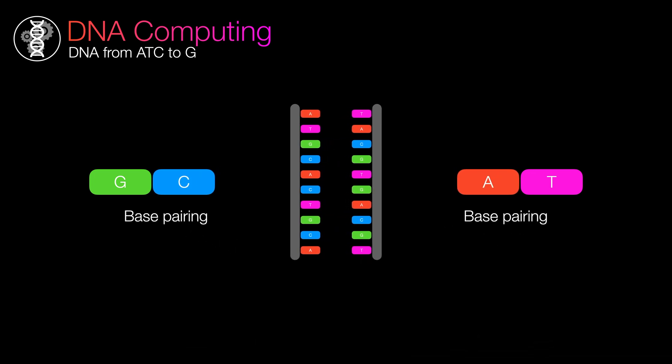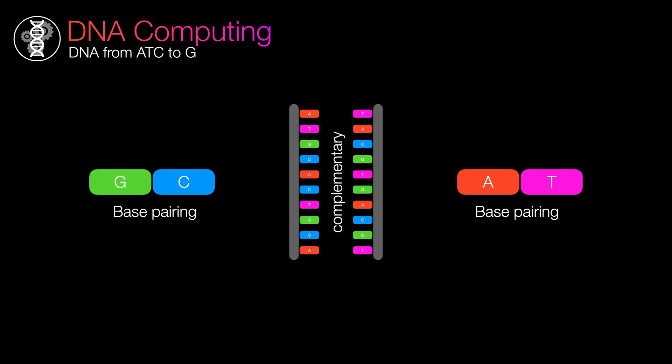Any two sequence that can base pair with one another are called complementary sequences. One quirk of DNA is that the ordering of the letter bases matter, and it is signified using this arrow. This is important because base paired DNA strands run anti-parallel with one another. If we have a complementary sequence but in the incorrect direction, they won't base pair properly. Keep this in mind when designing anything related to DNA. All of this leads up to the essence of DNA computing.